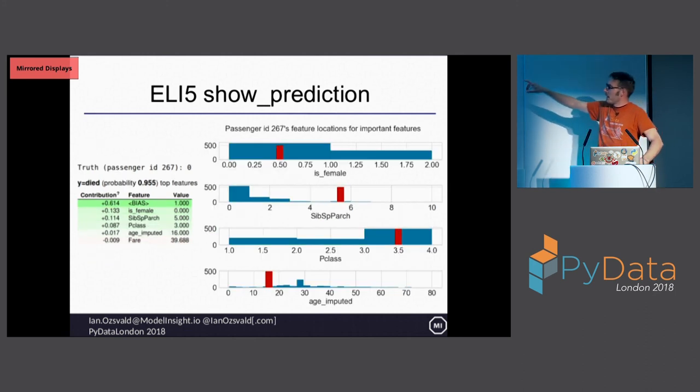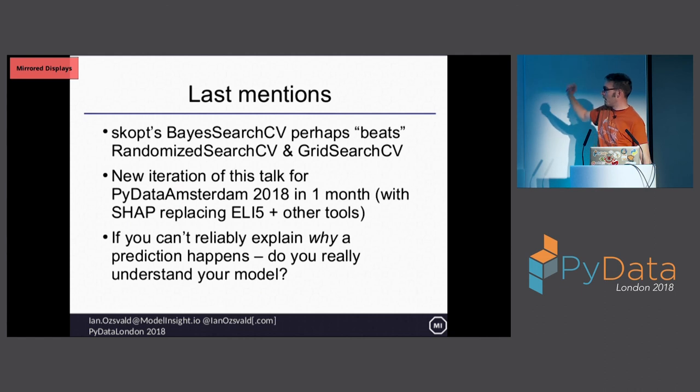One thing I've started playing with is drawing a distribution of the interesting features. Here we say, is female is my most predictive feature after the bias, the mean of the data set. So where are we in is female? It's a binary column, so it's zero or one. We're in the majority, okay, fair enough. Looking at sibling, spouse, parents and children, most people have zero, some have one, some have two, very few have five. So that's kind of interesting. Maybe there's something interesting about having such a large family. You can see the red bar is telling us where their age is and you can see that spike for that 28-year-old age imputed coming up.